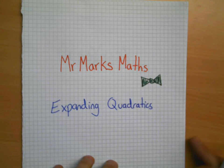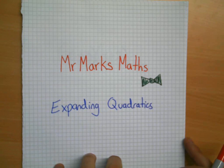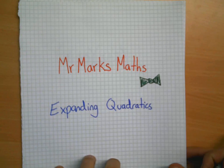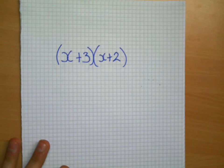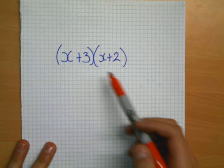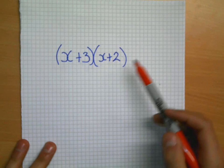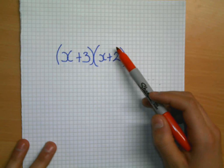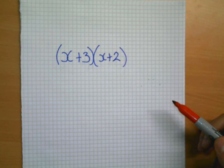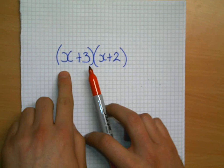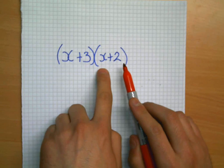Hello, and welcome to Expanding Quadratics with me, Mr. Marks. Expanding quadratics means that we're going to multiply one bracket by another bracket. The way that we have to do this is we have to make sure that everything in this bracket is multiplied by everything in this bracket.